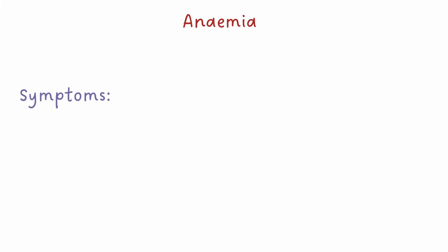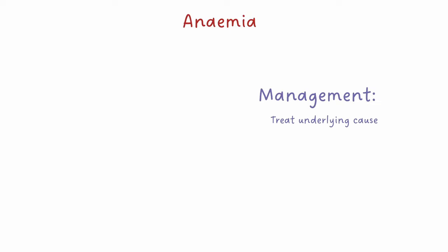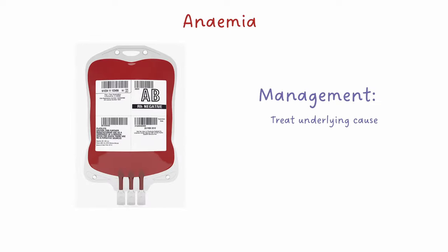Most commonly, anaemia will cause the patient to be short of breath, tired, have palpitations, and be pale. Management should be focused on the underlying cause of anaemia. If severe enough, patients may also require a blood transfusion. We typically give blood transfusions when haemoglobin falls to 70 or below.